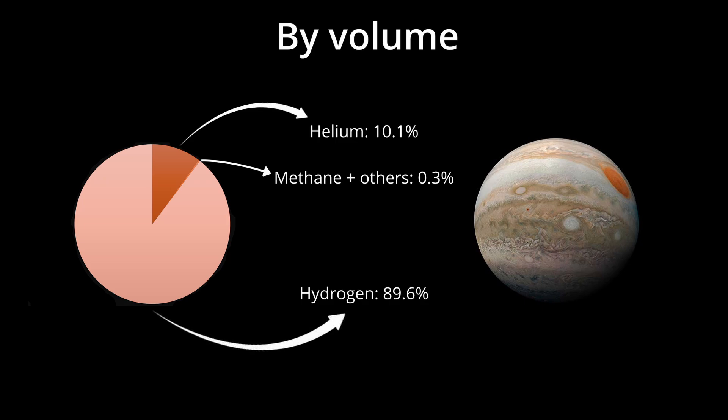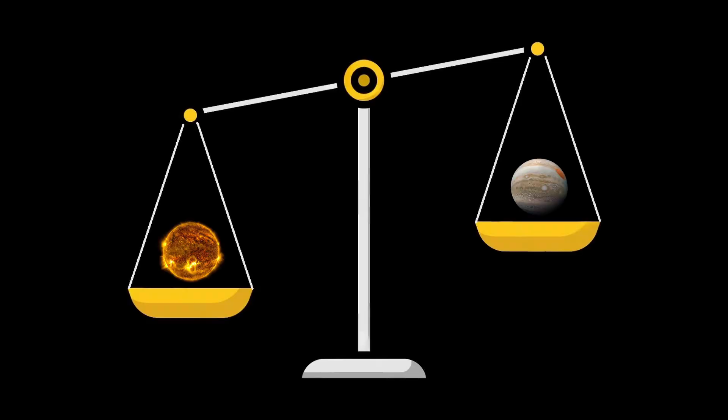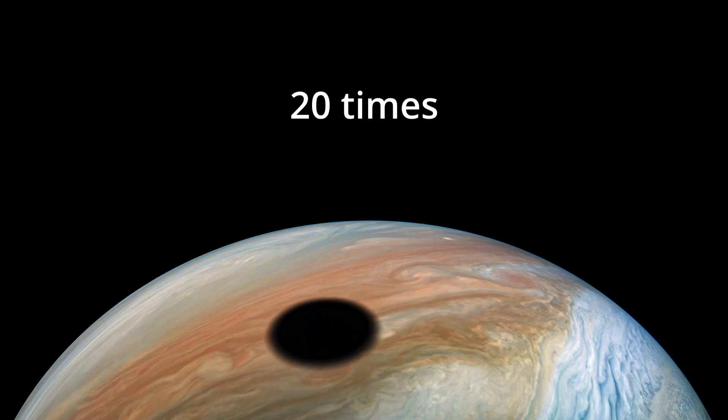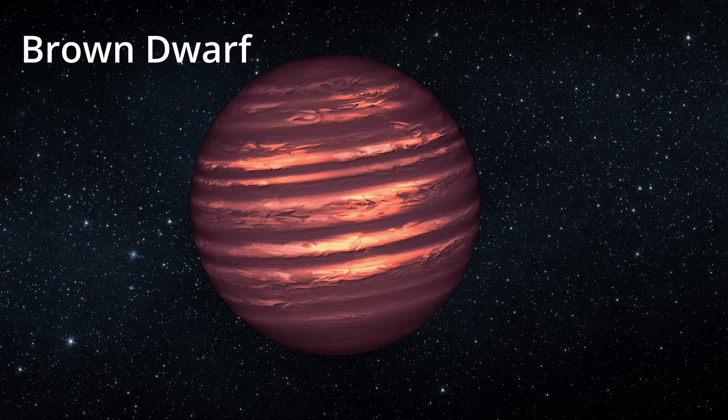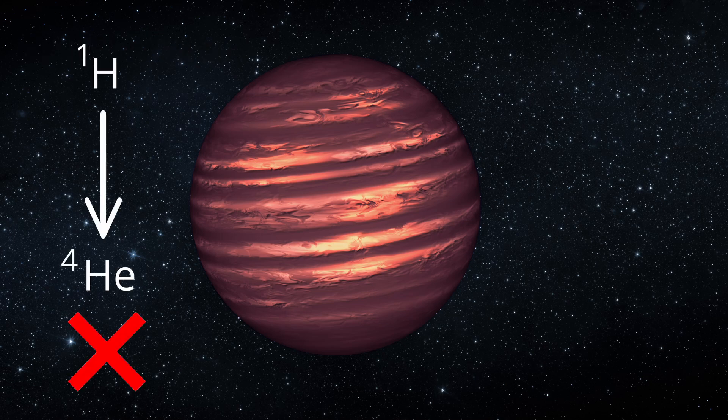But Jupiter is lacking a key ingredient: mass. Mass brings forth pressure, and pressure brings temperature. Even if it had 20 times the amount of mass, it would still not become a star. But then it would become an actual failed star - a brown dwarf.